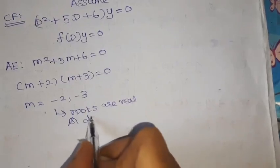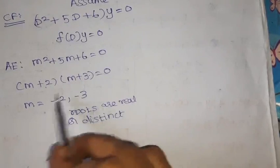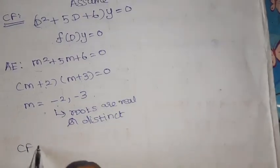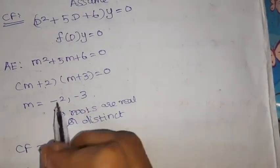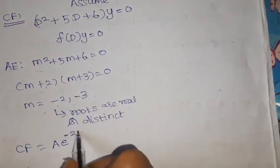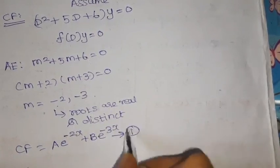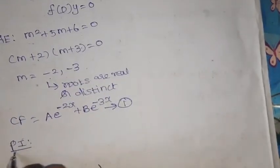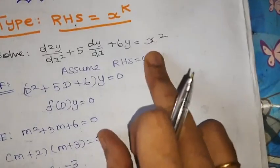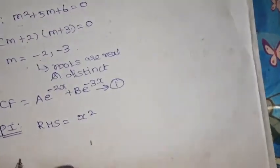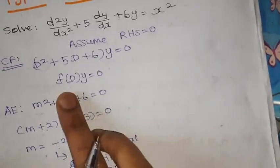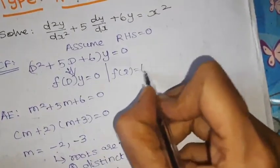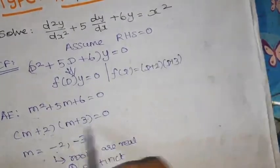Factoring gives (m+2)(m+3) = 0, so the roots are m = −2, −3. The roots are real and distinct. When roots are real and distinct, the complementary function is CF = A·e^(m₁x) + B·e^(m₂x), so CF = A·e^(−2x) + B·e^(−3x). This is equation 1.